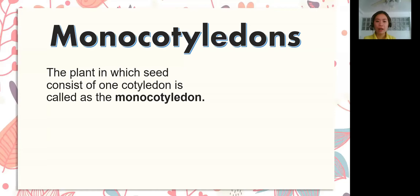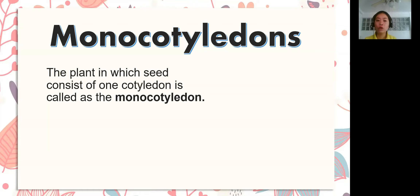Great job! So we will begin with defining what monocotyledons are. What is monocotyledons? The plant in which a seed consists of one cotyledon is called a monocotyledon. So it consists of only one cotyledon.